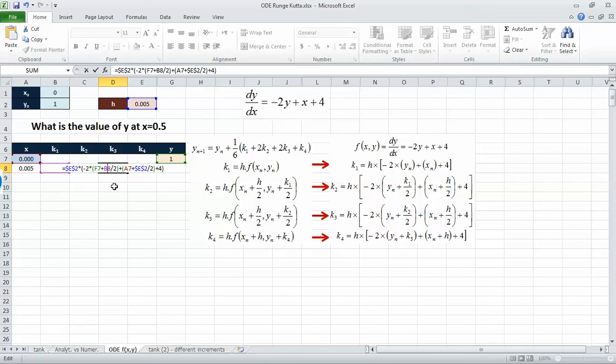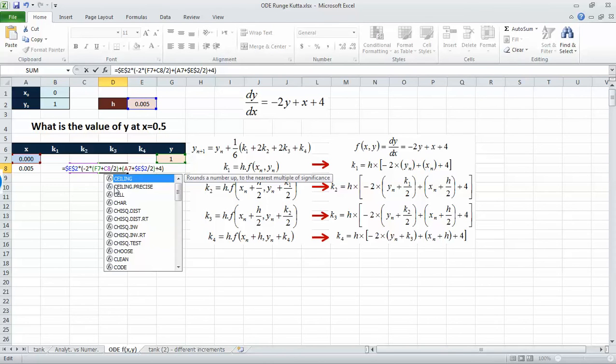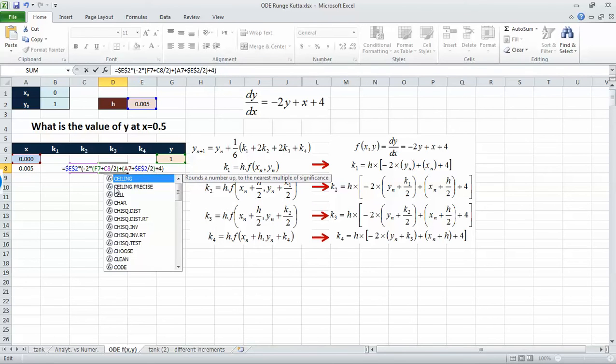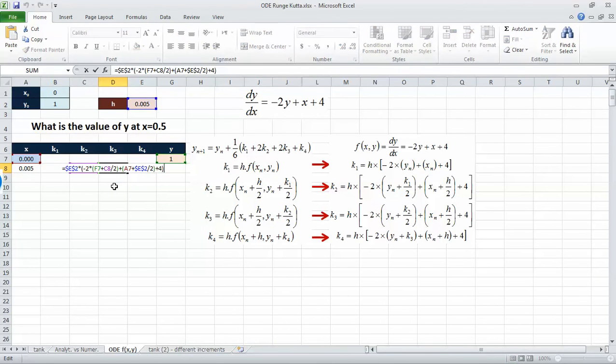And we're going to take this just to save some time and paste it here. The only difference would be that this is k2. Everything is going to be the same. And the last one would be the same, this doesn't have over 2 and this doesn't have over 2.